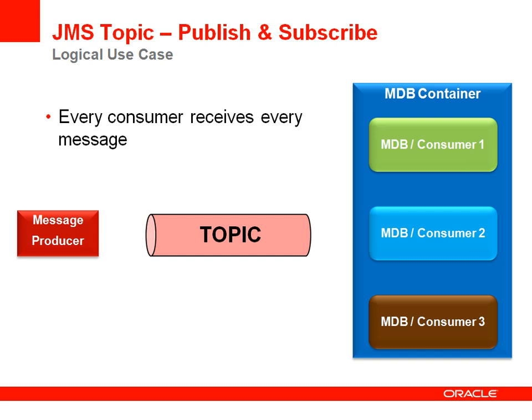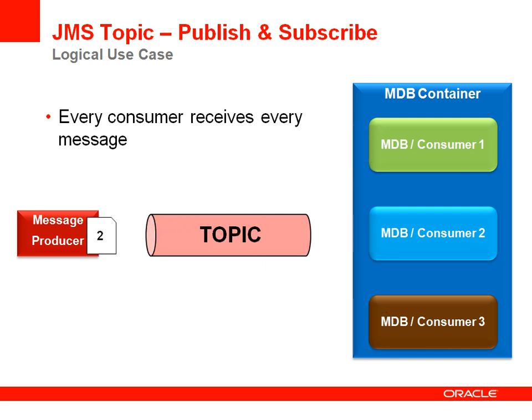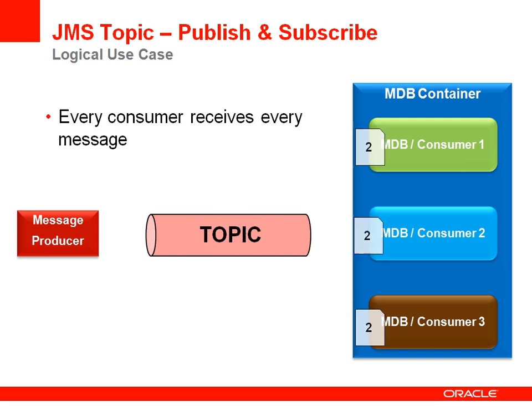The second JMS messaging use case is a publish and subscribe model. In this model, each message placed on the destination is received by each consumer. For the pub/sub model, JMS topics are used.